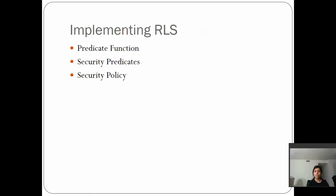The first step is creating the predicate function. Once you create the predicate function, you identify the security predicates. Then you create a security policy. Let's talk about each of these steps in detail now.